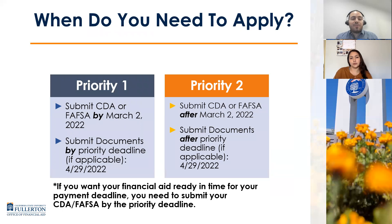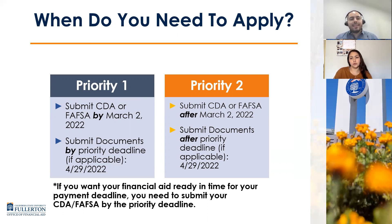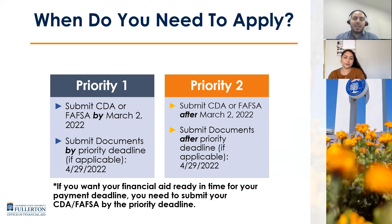These deadlines are very important. The FAFSA and CDA application have a March 2nd priority deadline, and documents have a priority deadline of April 29th. The biggest reason is that certain types of financial aid awards have a limited source of funding, which must be prioritized for students who submit all requested documents and applications on time. In order to be considered for all forms of financial aid — like the State University Grant that can potentially pay for your tuition — please submit everything on time. Students who don't submit by the respective due date will be considered a priority two applicant, and we cannot guarantee they will be considered for maximum financial aid.